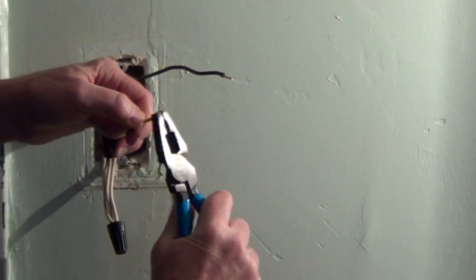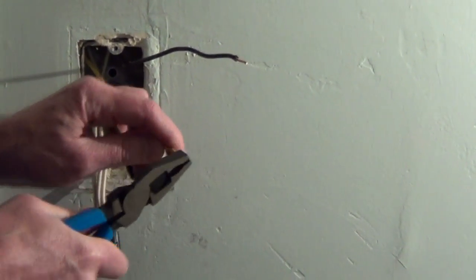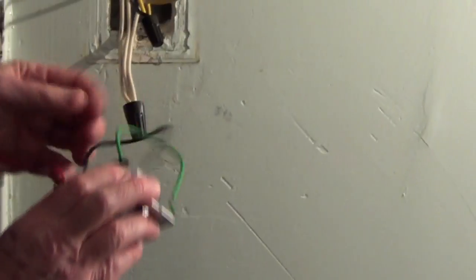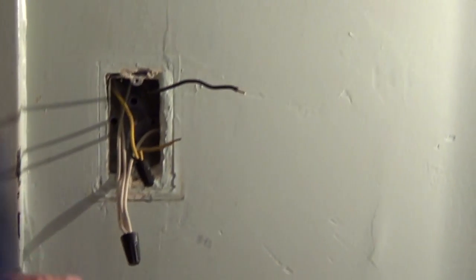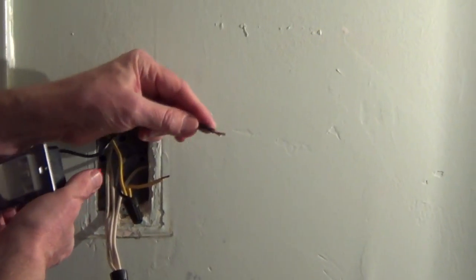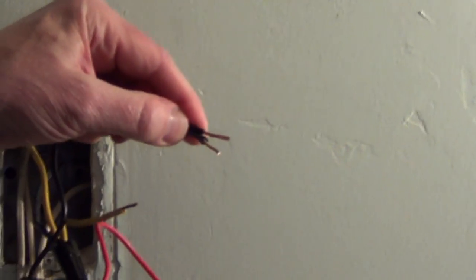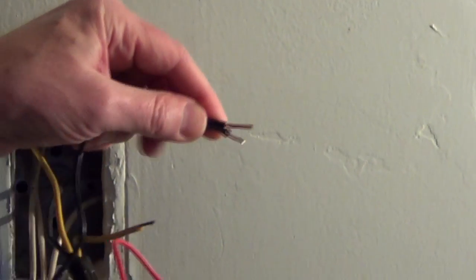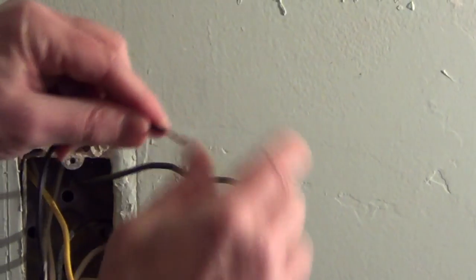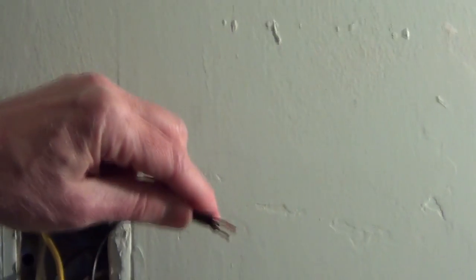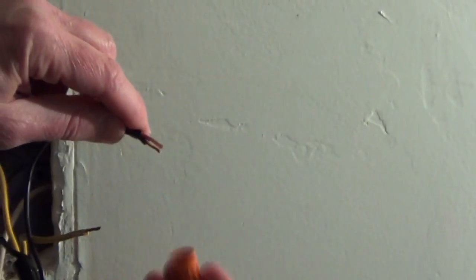The dimmer switch came with wire connectors and now we're going to attach the wire from the service panel to this black wire. Whenever you're connecting solid wire to stranded wire I like to have the stranded wire about an eighth of an inch longer than the solid wire.